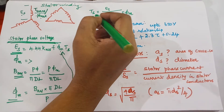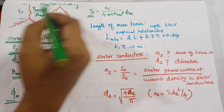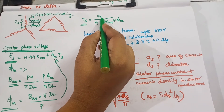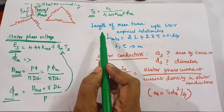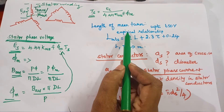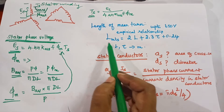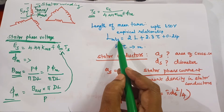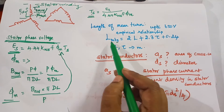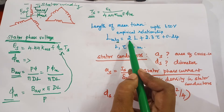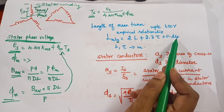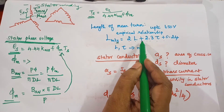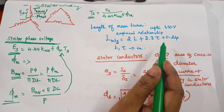From the EMF equation, I can find Ts — the number of turns per phase. Ts is calculated from the stator phase voltage: E = 4.44 × Kw × f × φm × Ts. For the mean turn length, this is an empirical relationship valid up to 650 volts: Z = 2L + 2.3τ + 0.24, where L is the length of the stator and τ is the pole pitch, both in meters.